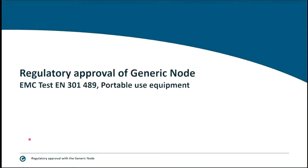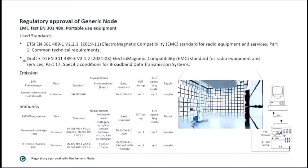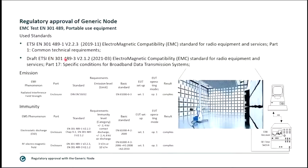Let's start with EMC testing, using the example of the Generic Node. For radio EMC, the relevant standard is EN 301-489, with the basic standard being Part 1: Common Technical Requirements. For a short-range device, we reference EN 301-489-3, which covers specific conditions for broadband data transmission systems including short-range devices. Looking at the -3 standard in detail, we have emission to be tested and immunity phenomena to be tested, done both radiated and conducted.